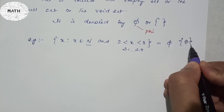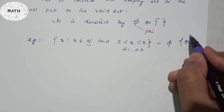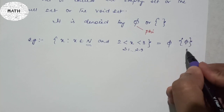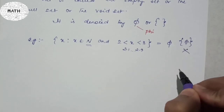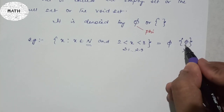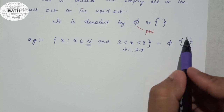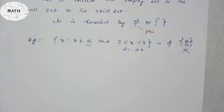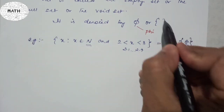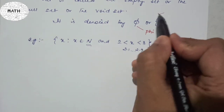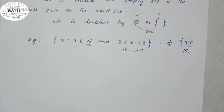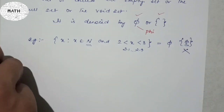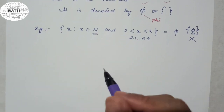If you write a set with something inside the curly brackets, that is not an empty set, because something is there inside. To denote an empty set you must use either phi or empty curly brackets — those are the only two correct ways.